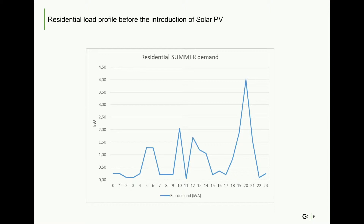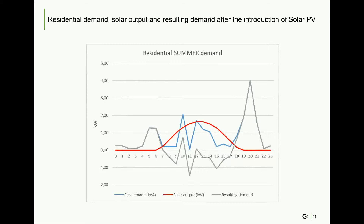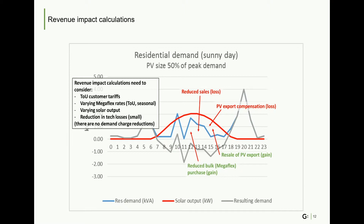Now this house has installed rooftop PV. This chart shows the original consumption profile, which is the blue line, the solar PV output, which is the red line, and the resulting demand, which is the grey line. Where resulting demand is negative, this means that production of electricity exceeds supply and the customer will want to export that electricity back onto the grid. Where demand is positive, the customer will import electricity from the grid to supplement their own generation. The municipality needs to purchase less power from ESCOM and thus this is a cost saving.